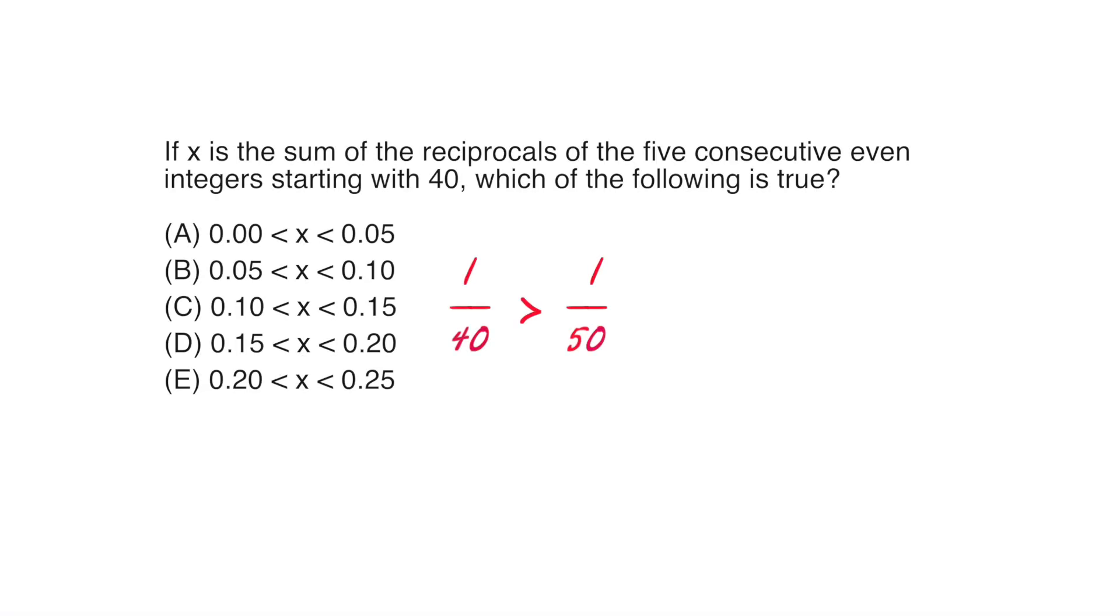Instead, let's try to reason our way out of it. Well, each of the five numbers is greater than 1 over 50. So the sum is going to be greater than 5 times 1 over 50, or 5 over 50.